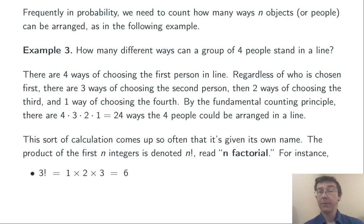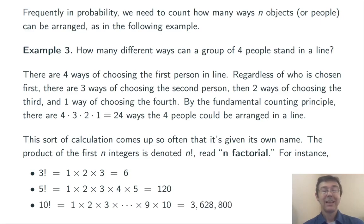So for example, 3 factorial is 1 times 2 times 3, 5 factorial, 1 times 2 times 3 times 4 times 5, and 10 factorial is the product of the numbers between 1 and 10. And that's already more than 3 million. N factorial grows fast. Its growth is faster than exponential.